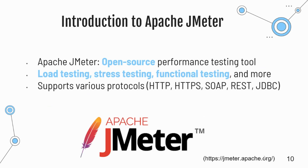Apache JMeter is an open-source performance testing tool that provides a wide range of capabilities. It offers a comprehensive set of features to conduct various types of tests including load testing, stress testing, functional testing, and more. JMeter supports various protocols including HTTP, HTTPS, SOAP (Simple Object Access Protocol), REST, and JDBC, making it adaptable to different types of applications and technologies.